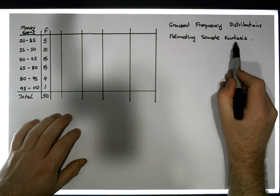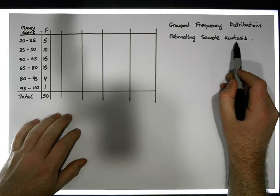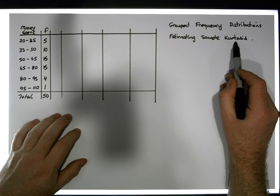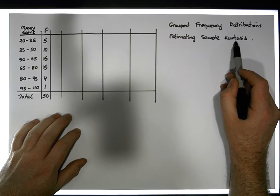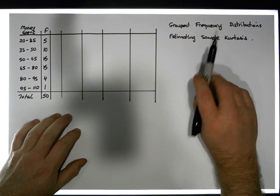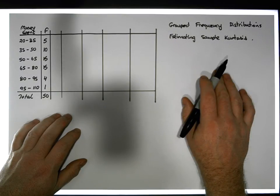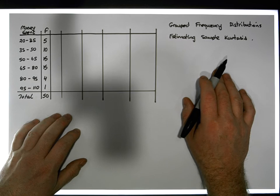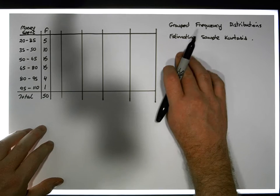Kurtosis is the fourth moment with respect to a probability distribution. It represents how peaked the particular distribution is. A leptokurtic distribution is very peaked relative to a normal distribution, and a platykurtic distribution is relatively flat with respect to a normal distribution.